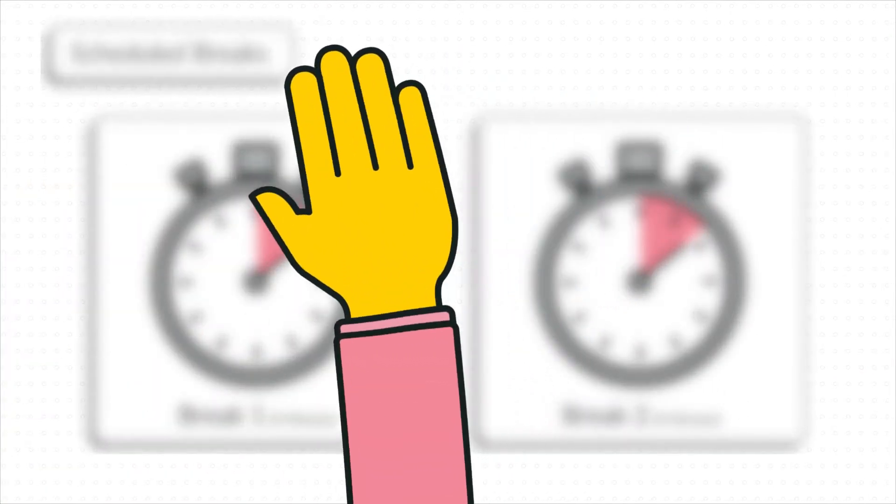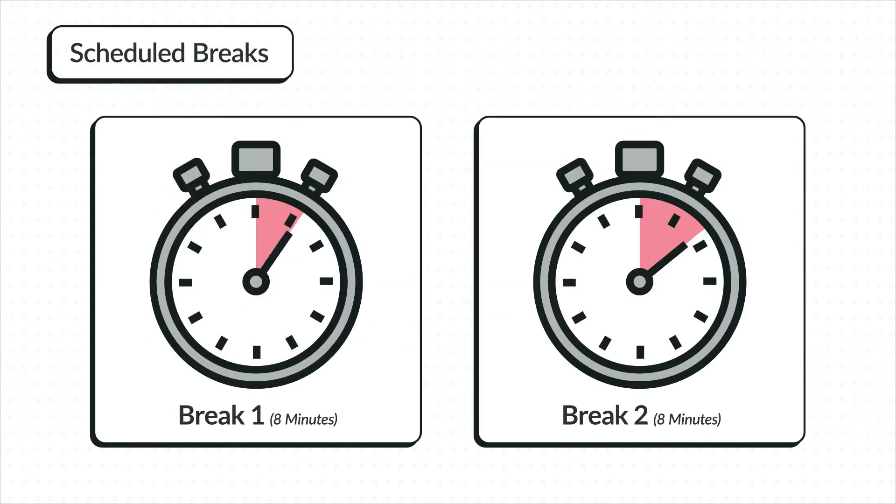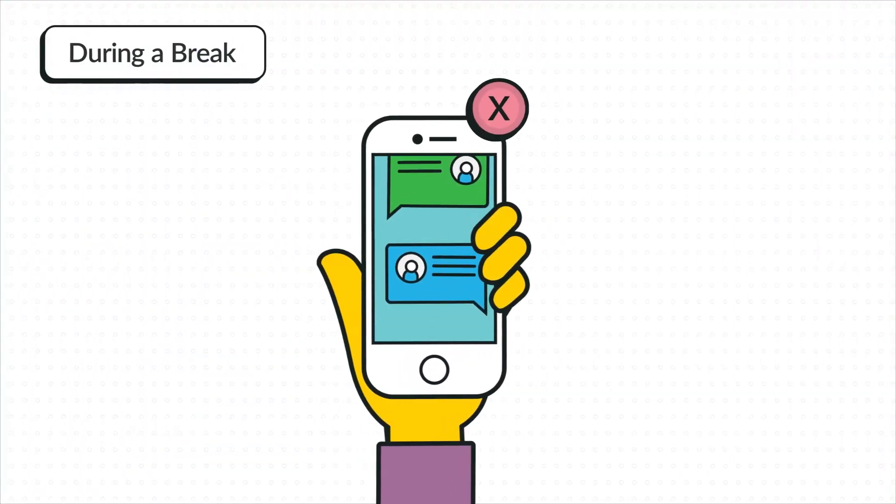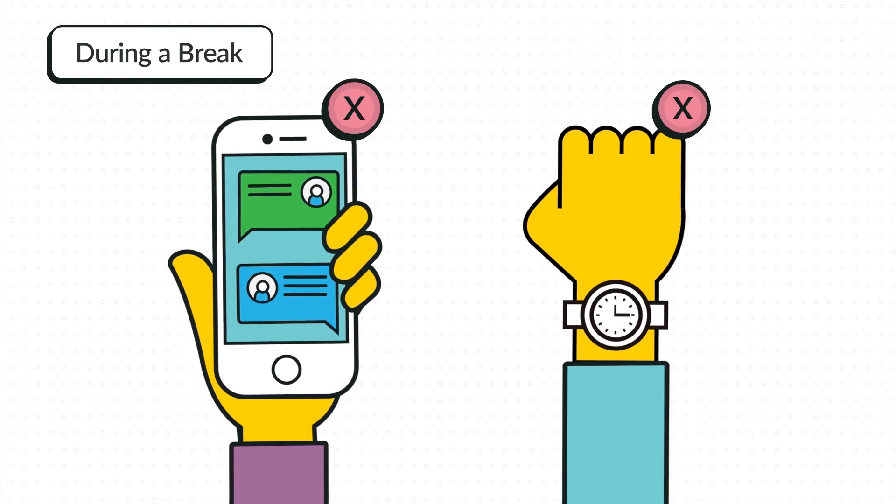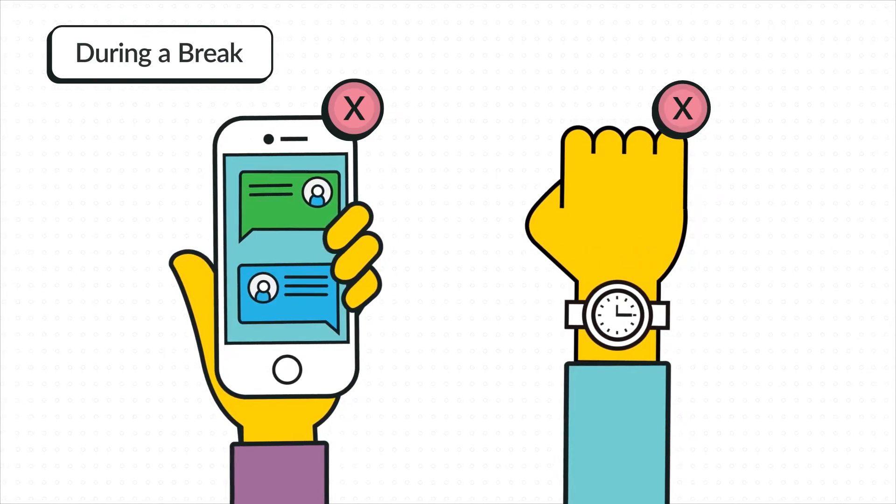At the time of the break, raise your hand, indicating that you are electing to take your break. You cannot use your phone or watch, even during a break. Using these items can cause your score to be cancelled.